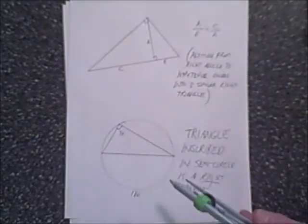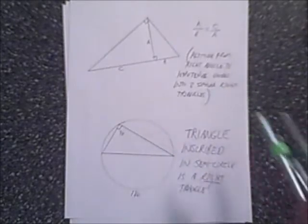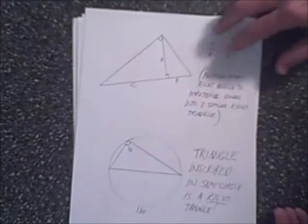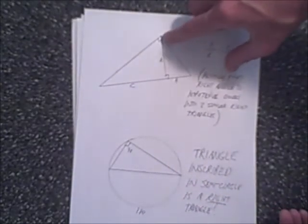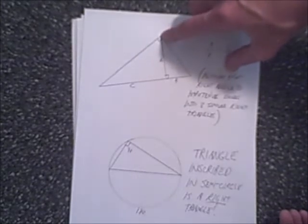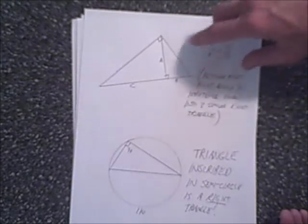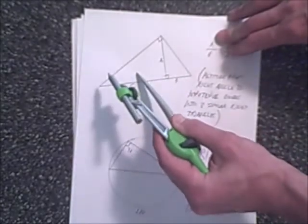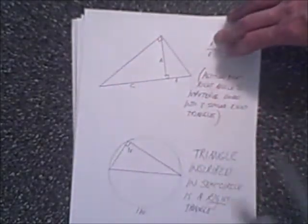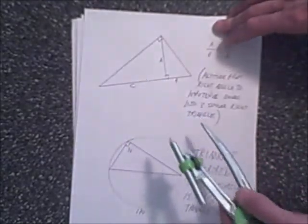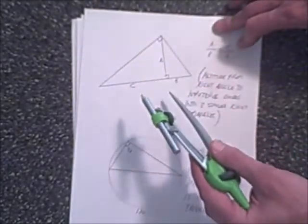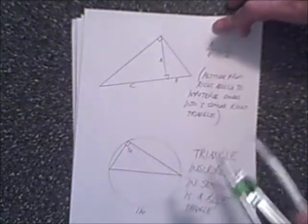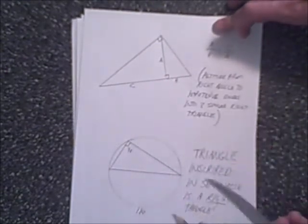There are two helpful geometry theorems we'll need for this project. The first involves a 90-degree angle. If you drop an altitude from the vertex of the 90-degree angle to the hypotenuse, you form three similar right triangles: the small one, the medium one, and the original big one.